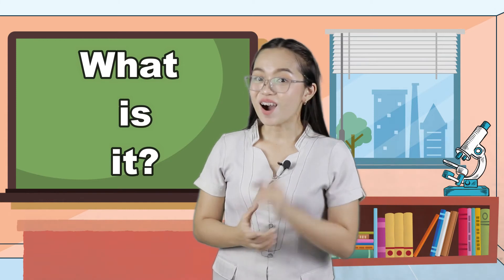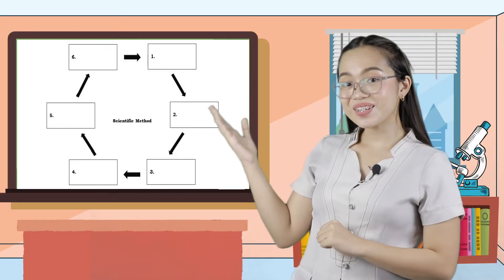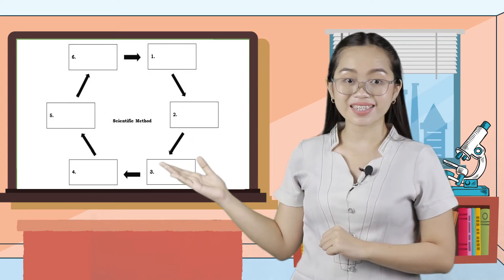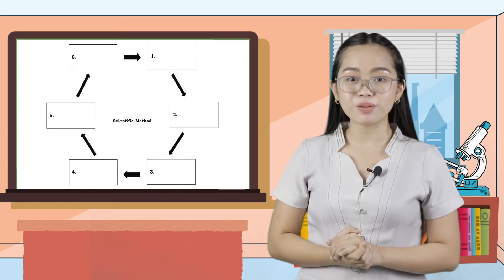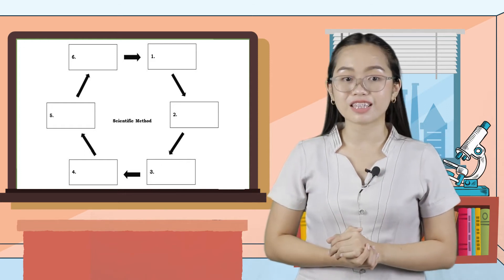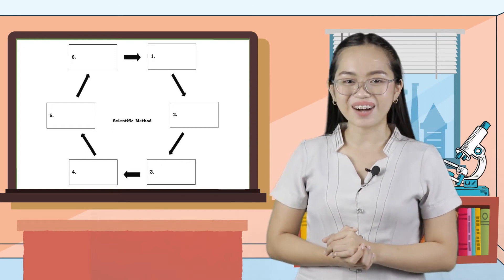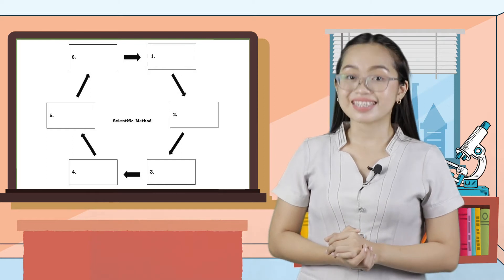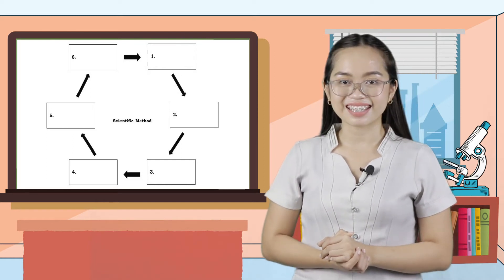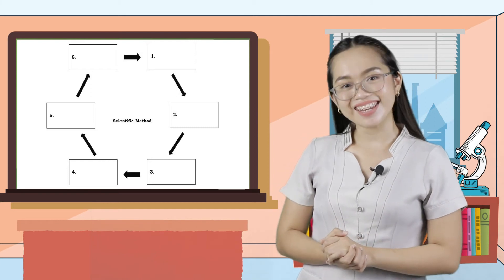Let's call this activity 'What Is It?' Are you ready? As you can see on your screen, there are boxes. All you have to do is write the six basic steps of the scientific method inside the box. You are given 60 seconds to finish the task. Timer starts now.